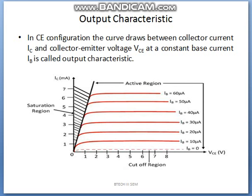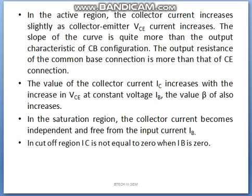Now we discuss the output characteristics of common emitter configuration. The curve is plotted between collector current and collector-emitter voltage at constant base current IB. The output characteristics are explained in three regions: active region, saturation region, and cutoff region. In the active region, the collector current increases slightly as collector-emitter voltage increases. The slope of the curve is quite more than the output characteristics of common base configuration. The output resistance of common base connection is more than that of common emitter connection. The value of collector current increases with the increase in collector-emitter voltage at constant IB, and the value of beta also increases.